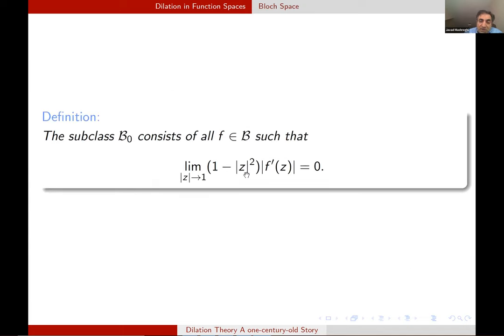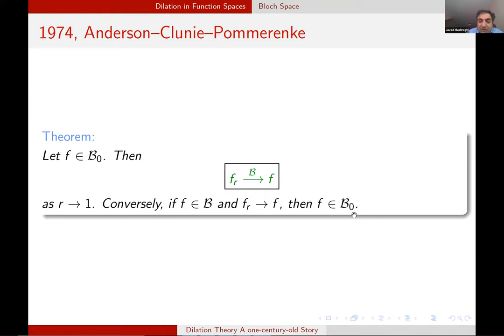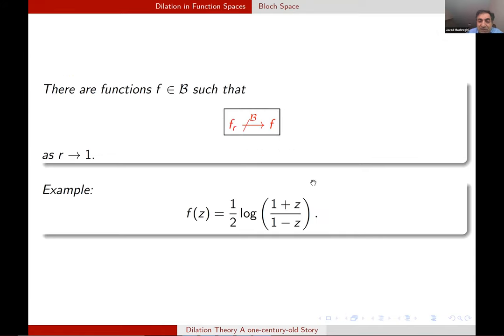Instead of assuming that this quantity is upper bounded, we assume that it becomes small when we go to the boundary. The limit is in fact equal to zero. We call the space B_0. And for that space, there is a famous theorem of Anderson, Clunie and Pommerenke. Says that the dilation works in B_0. And moreover, if it works, the element has to be in B_0. And it is now easy to show that this function is not in B_0. So this doesn't work.